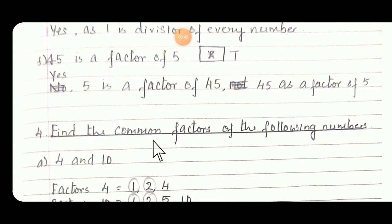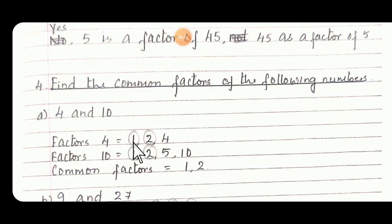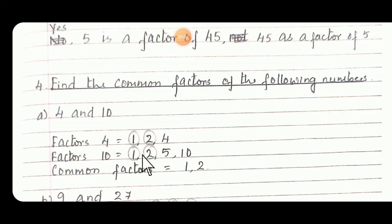Find the common factors of the following. Question A: 4 and 10. We need to find the factors first, then only we can find common factors. Factor of 4: 1s are, 2s are, and 4s are. Then 10: 1s are, 2s are, 5s are, and 10s are. In these two you have to find the common factors. The common factors are 1 and 2.